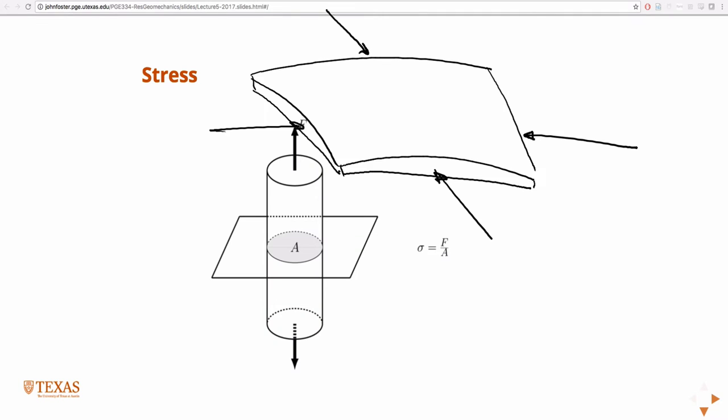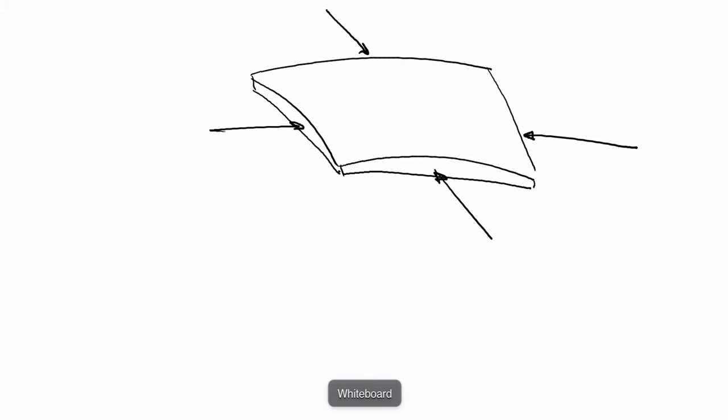So of course, this is a counterexample to what I said. This is one place, at least, in the Earth where the crust is in significant tension. But for the most part, and for all practical purposes in this class, we'll assume that the Earth is always in compression. And so these forces that act on any section of the Earth's crust, if we normalize them by some area, we call them tractions.